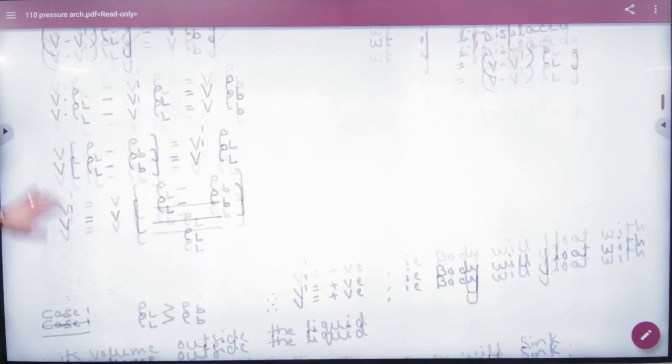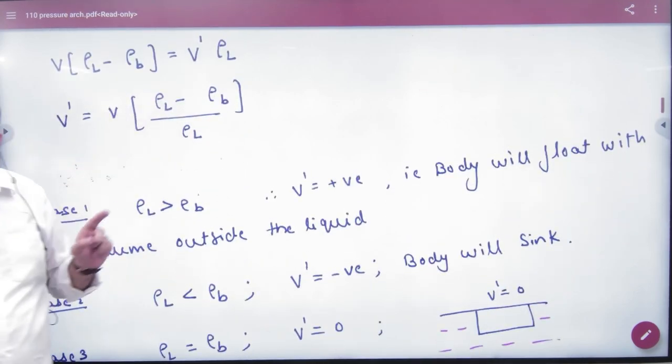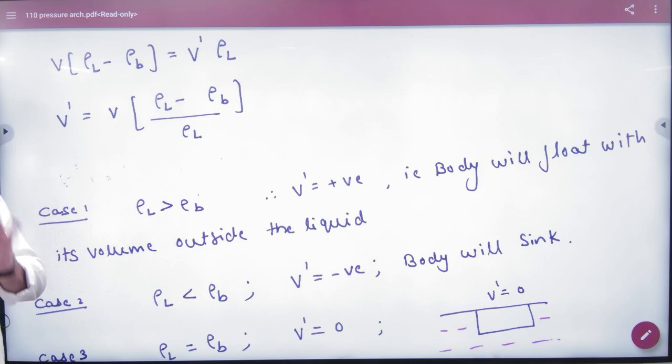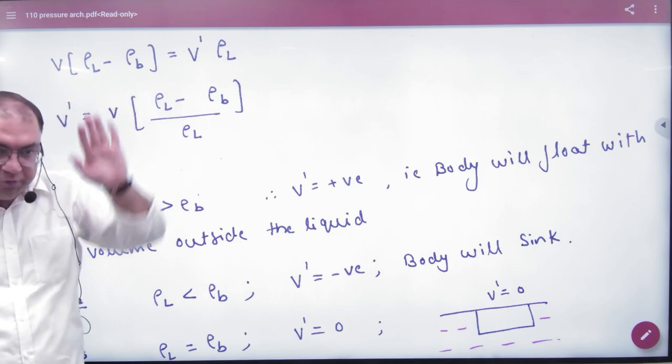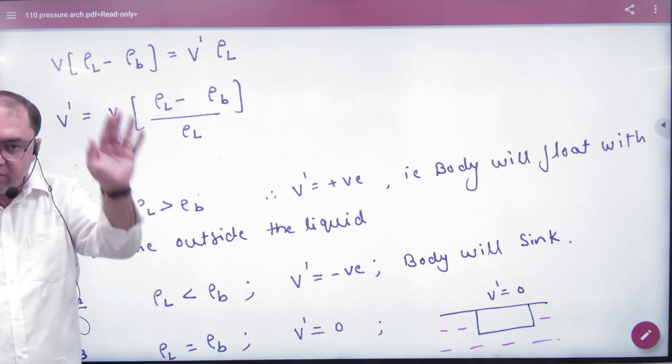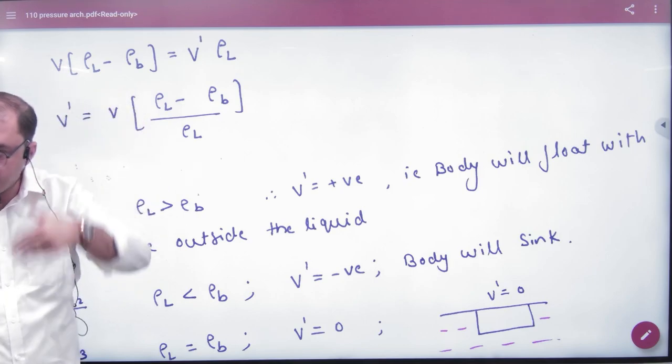Now case number one. If liquid density is greater than the body density, then V' will be positive. V' is positive means the body is floating. When V' is positive, some part of the body will be in the liquid.